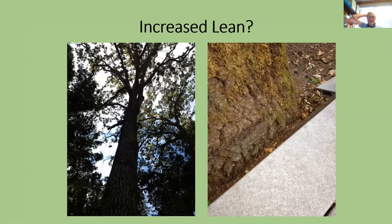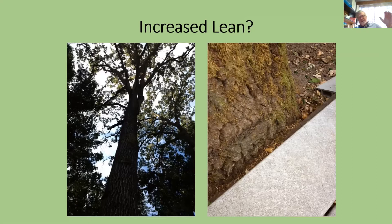An increased lean is a problem. A lean is usually not a problem if the tree always grew that way and developed enough wood and root system to support itself. But increased lean is concerning. For example, I looked at a leaning oak tree and found a small indentation at the base where it was growing up against a deck. When I asked how long the deck had been there, the answer was years — meaning there had been movement, there was a gap, and there was increased lean. Unfortunately, that's a removal.